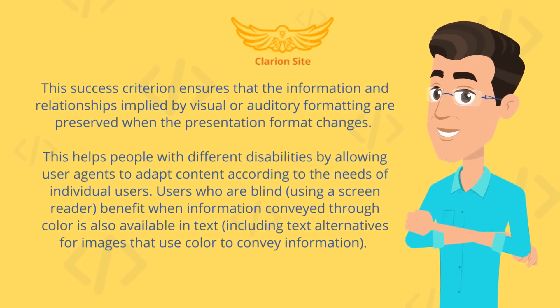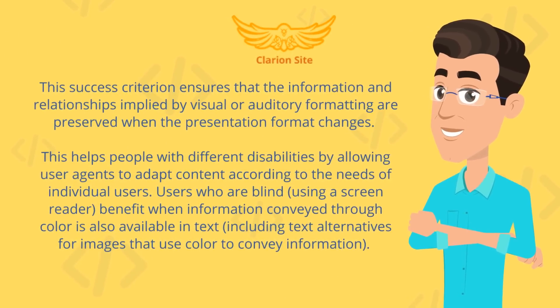This success criterion ensures that the information and relationships implied by visual or auditory formatting are preserved when the presentation format changes. This helps people with different disabilities by allowing user agents to adapt content according to the needs of individual users. Users who are blind using a screen reader benefit when information conveyed through color is also available in text, including text alternatives for images that use color to convey information.